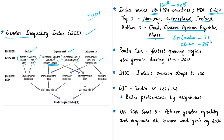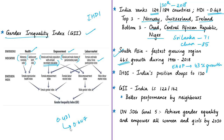South Asia was the fastest growing region in human development progress, witnessing 46% growth over the 1990–2018 period, followed by East Asia and the Pacific at 43%. India's HDI value increased by 50%, from 0.431 to 0.647 during this period, placing India above the South Asian average of around 0.642.